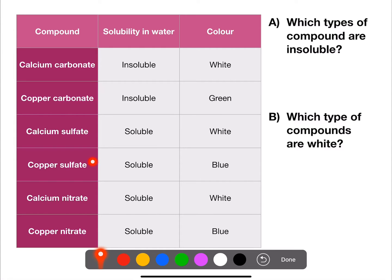The first part of the question asks us to look for which types of compound are insoluble. We have two compounds which are insoluble in water. The thing which is common between the two is that they both contain carbonate.